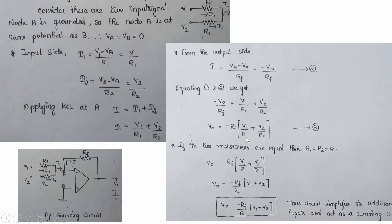Rearranging the equation, we get Vo = −Rf × (V1/R1 + V2/R2). This is the general equation for the output voltage of the inverting summing amplifier. The expected output is Vo = −(V1 + V2), and we now consider special cases based on resistance values.